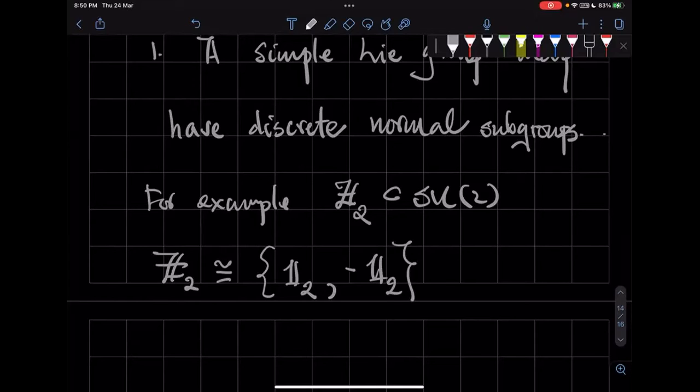And all of these matrices, because they're diagonal matrices, they commute with all the elements of SU(2), right? So therefore they're an abelian subgroup and therefore they're a normal subgroup. That's right. But they are not Lie groups. But Z2 is not a Lie group.